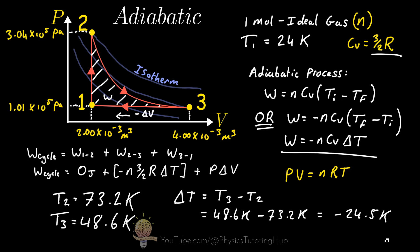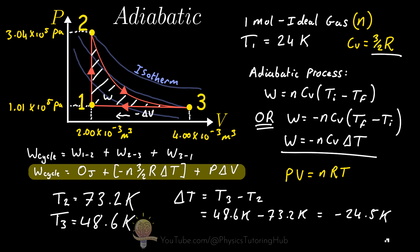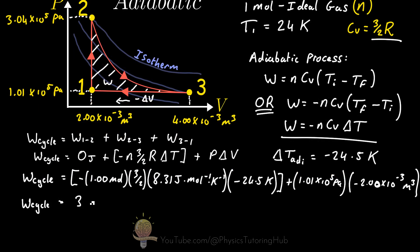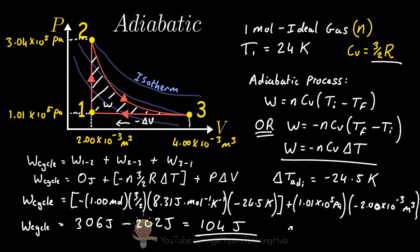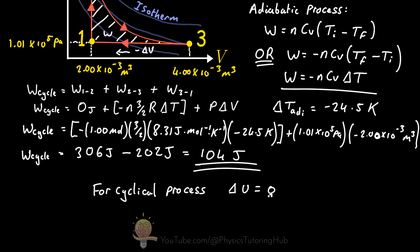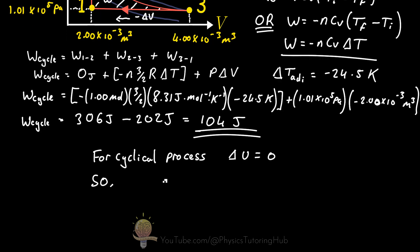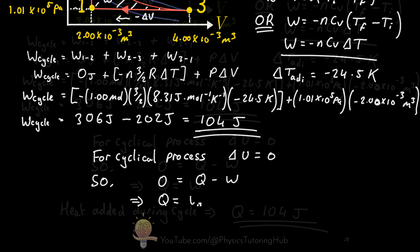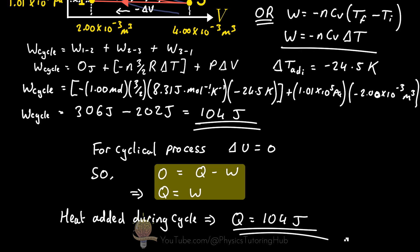The gas drops in temperature by 24.5 Kelvin during the adiabatic process. So we can work out the total work done for this thermodynamic cycle, and we get a value of positive 104 joules — positive because the cycle moves clockwise. Because the change in internal energy for a cyclical process is equal to zero (the gas returns to its original state after one cycle), we can conclude from the first law of thermodynamics that the heat transferred to the gas is also equal to 104 joules.